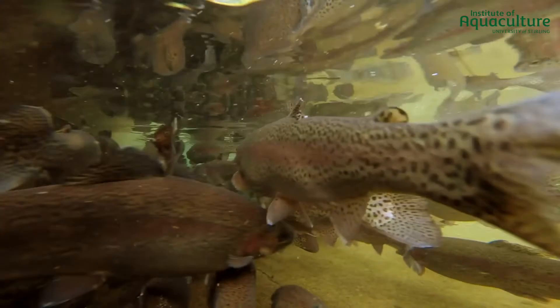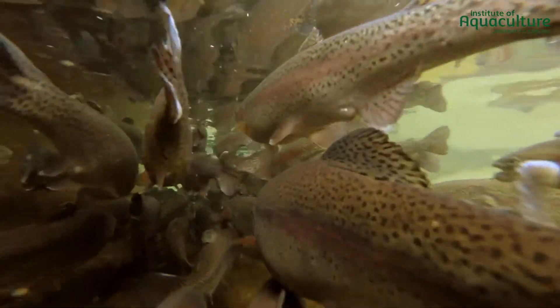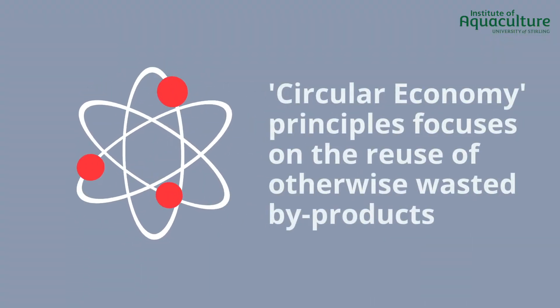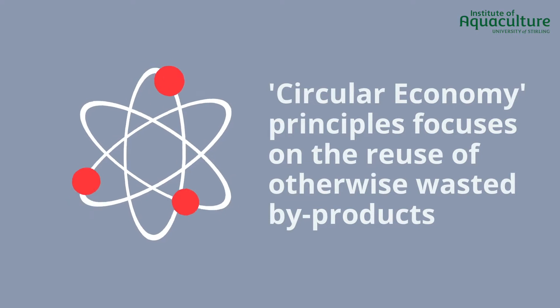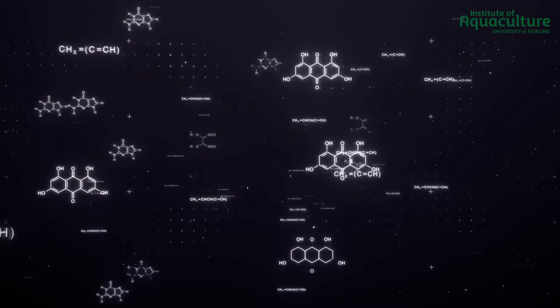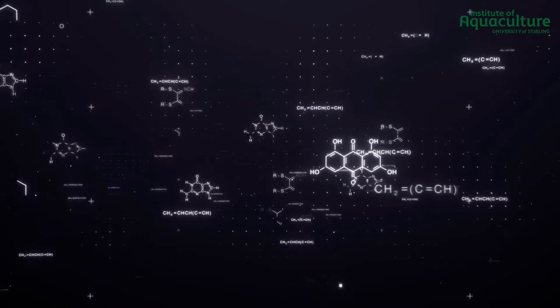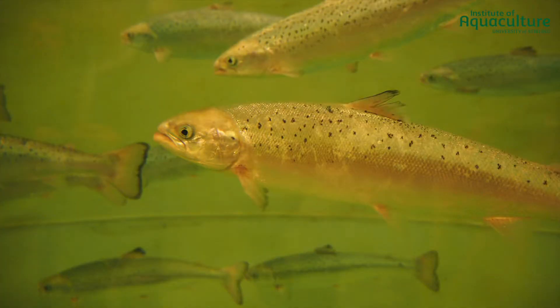Aquaculture waste often contains uneaten or unabsorbed nutrients, which are lost through waste discharge. In line with circular economy principles, nutrients in wastewater can be used to create valuable co-products that capture the dissolved nitrogen and phosphorus that would otherwise be discarded. Using salmon smolt wastewater for algae production is one example of this.